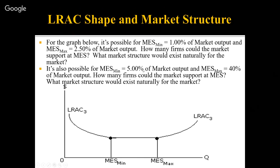Here's one more possibility for the same graph. Suppose the smallest size to achieve MES is 5% of market output and the largest is 40%. One hundred divided by five is 20 firms if all at the smallest size — producing 5% of market output is considered large. We could have two firms at 40% and one at 20%, giving three firms. In the 20 to 40% range, firms are still considered large, so we're looking at three to 20 large businesses — that's naturally some kind of oligopoly.